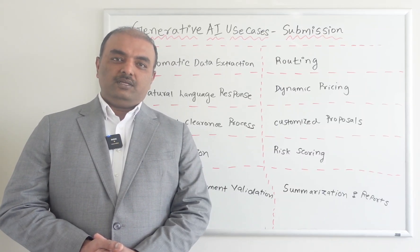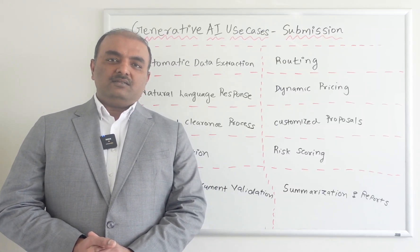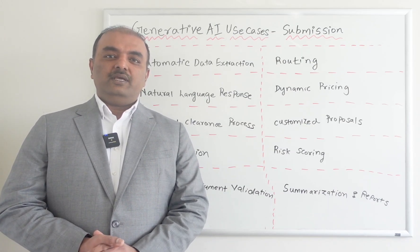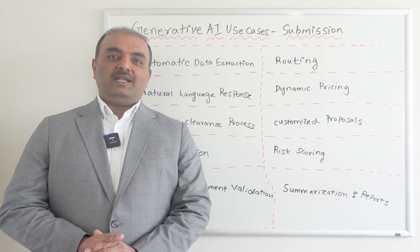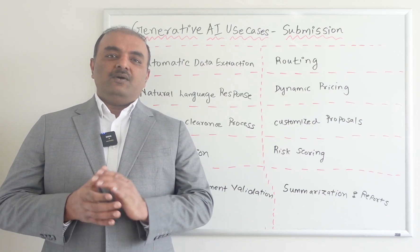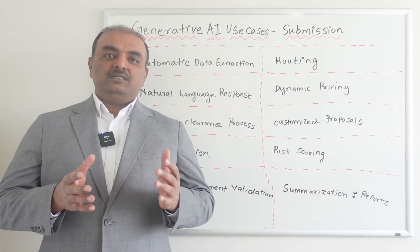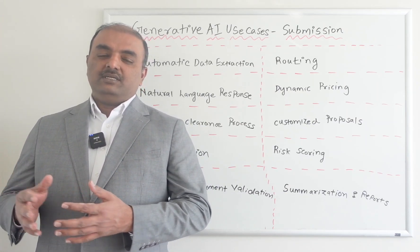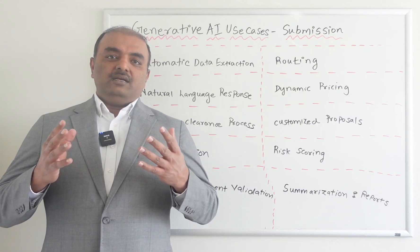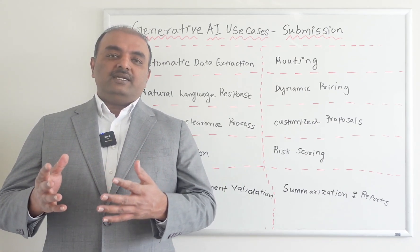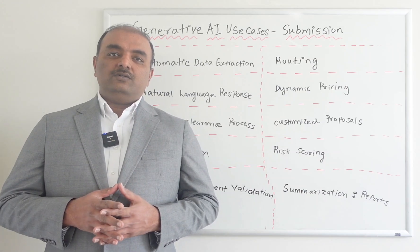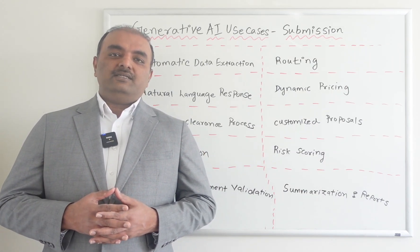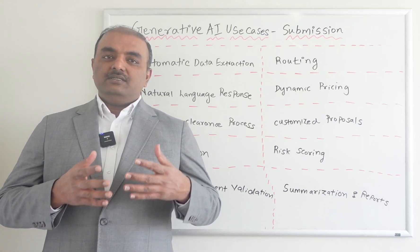Hi everyone, this is Prashad Parthiban. In the last few training videos, I have covered Generative AI use cases in CLIMB's lifecycle. From now on, I will be starting discussing about Generative AI use cases in underwriting processes. When it says underwriting, the step one in underwriting is submission. So today we will cover few of the main use cases where Generative AI can help the submission process.